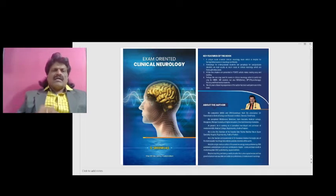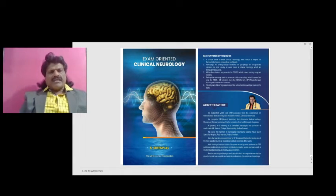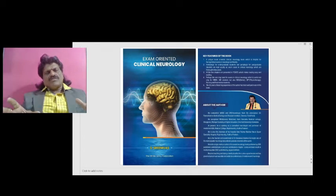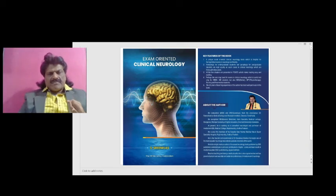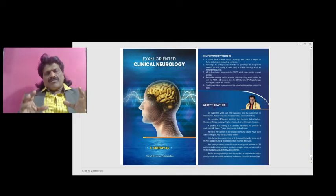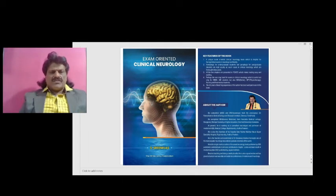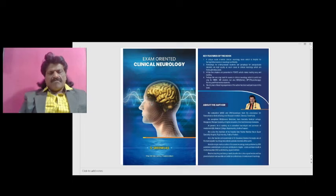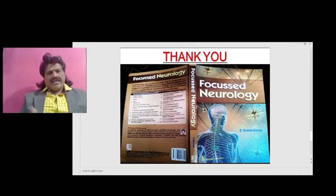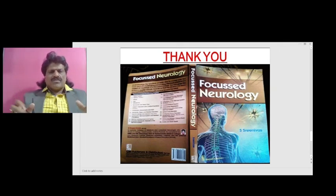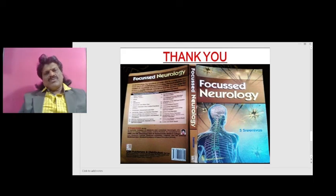These are the important concepts of monoplegia clinical approach — whether the distal or proximal muscles of the limbs are affected. The other important clinical concepts of neurology including history taking, general examination, neurologic examination, hemiplegia, and paraplegia are covered in the book Exam Oriented Clinical Neurology written by Dr. S. Srinivas. Another important book, Focused Neurology by the same author, covers all important concepts of neurology in a question-and-answer format, available online from all leading booksellers including Amazon.